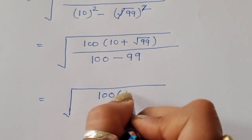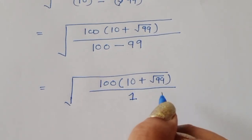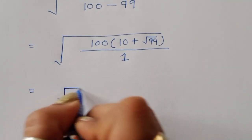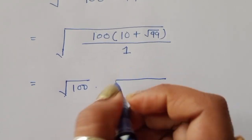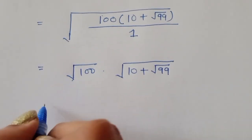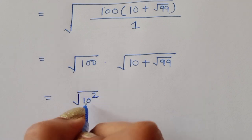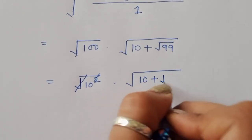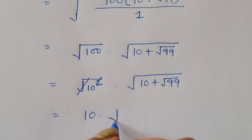Now this equals 100 times (10 plus √99) divided by 1, which simplifies to 100 times (10 plus √99). We can write 100 as √100 times √100, and since √100 equals 10, we can write this as √100 times (10 plus √99), which equals 10 times (10 plus √99).